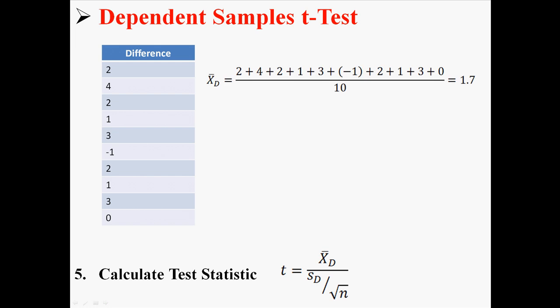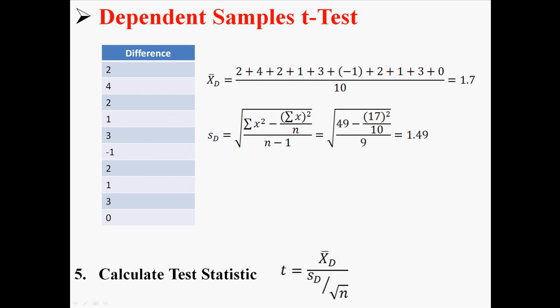First we find the mean difference by adding all the difference scores together and dividing by 10, giving us an average difference of 1.7. The standard deviation of the differences works out to 1.49. With n equal to 10, plugging 1.7, 1.49, and 10 into the t equation gives us t equals 3.61.